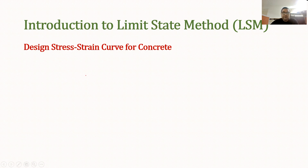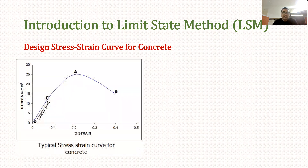First we will see the actual stress-strain curve of concrete — the same curve we have seen in the previous course also. In this case, from O to C it is linear, then C to A it becomes a little parabolic, and then A to B it is declining. This is the actual curve.